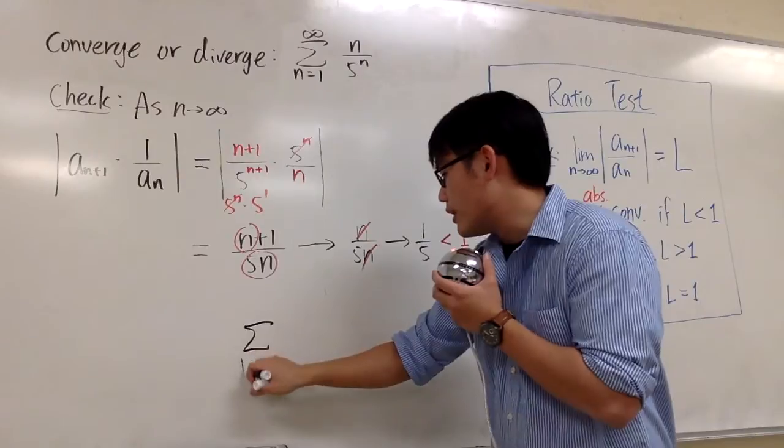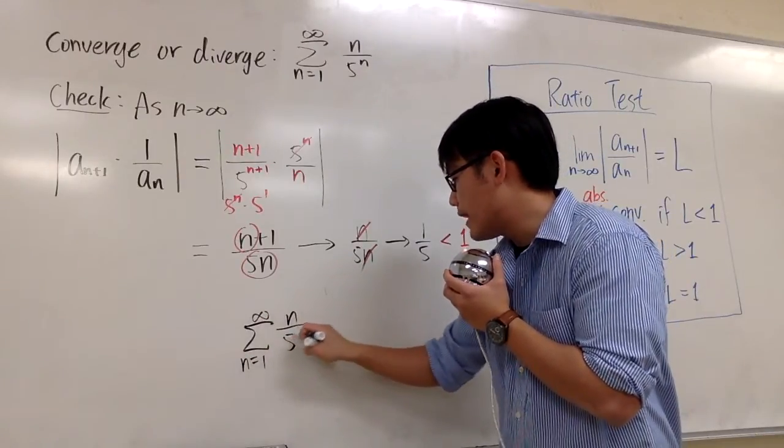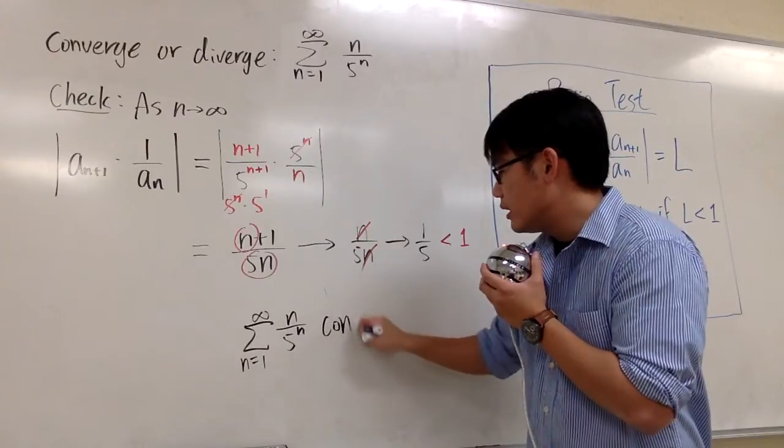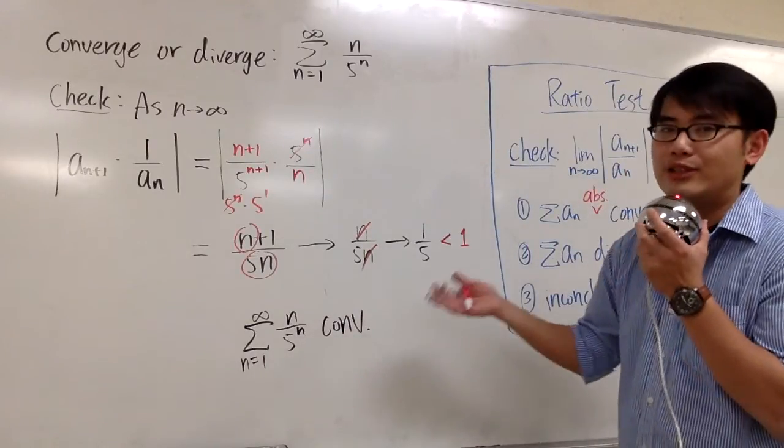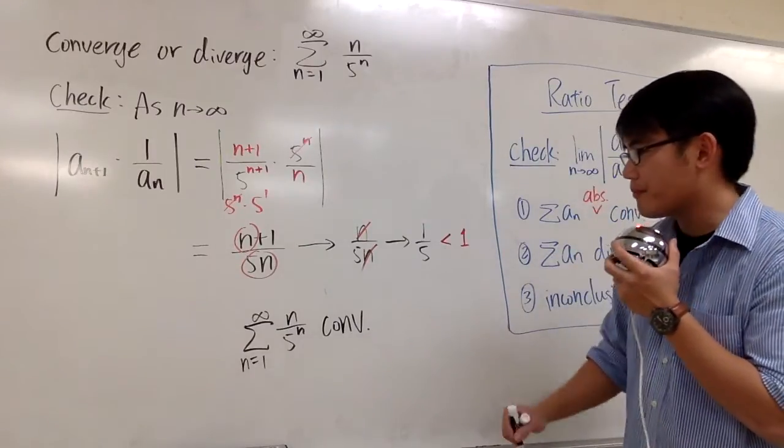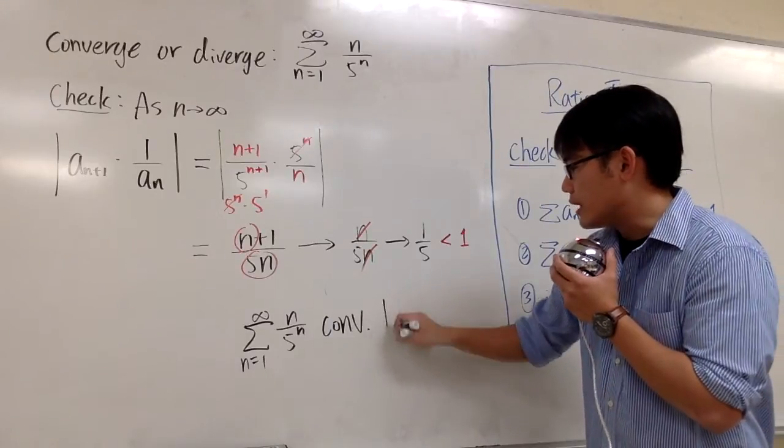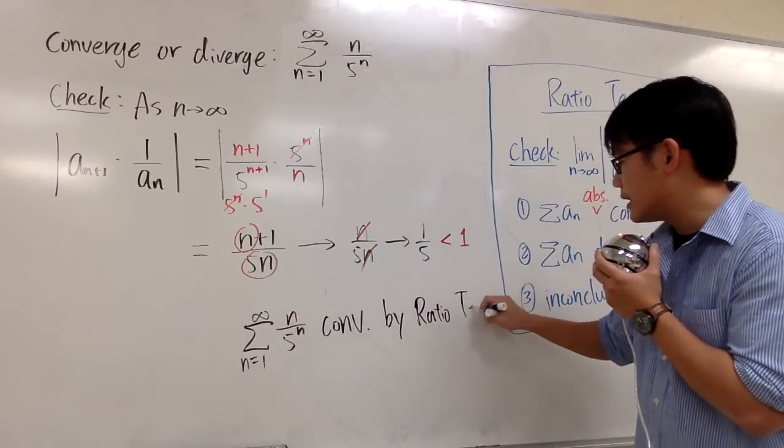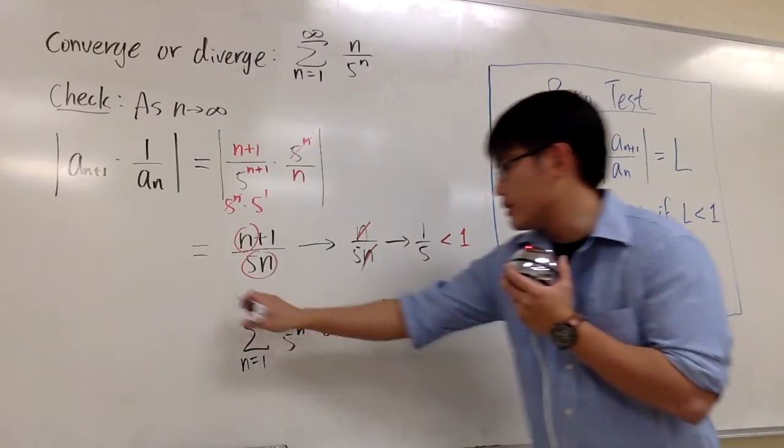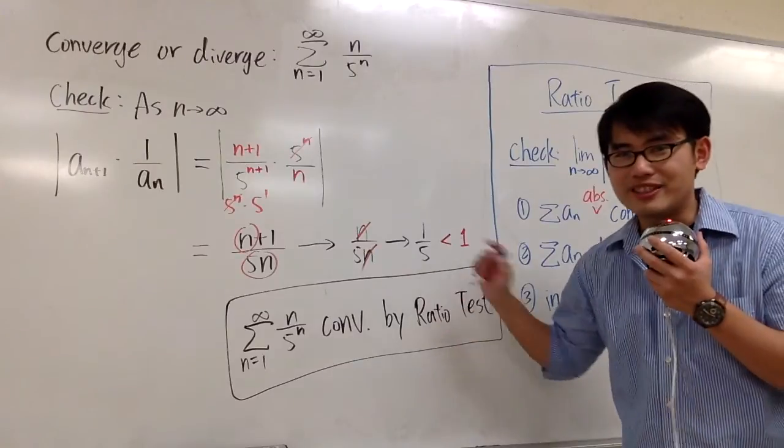So I will just write down the conclusion. The original series, when n goes from 1 to infinity, n over phi to the n, we can just write it down: it converges. But technically I should have said it converges absolutely, but this is fine. This series converges, and I will just say, by the ratio test. So this right here is the conclusion, and that was the check. This is it.